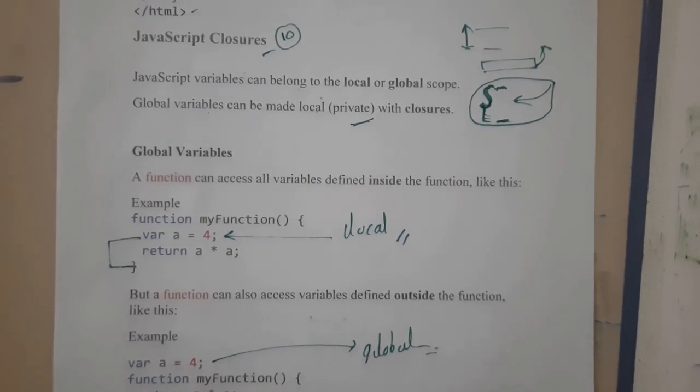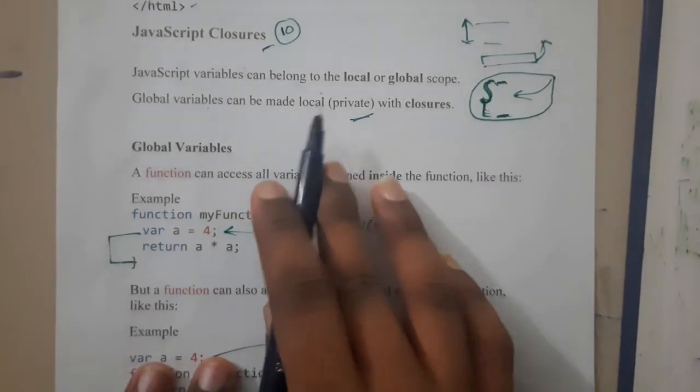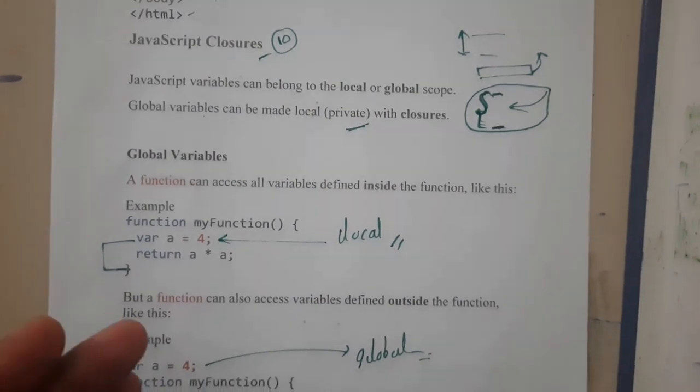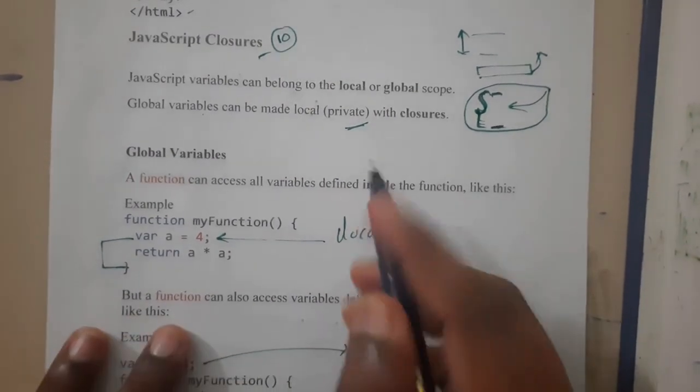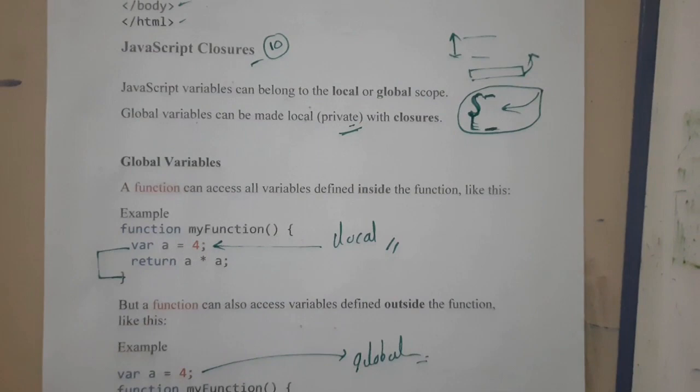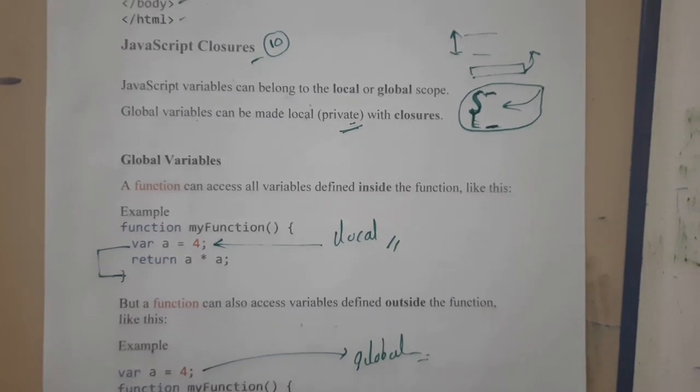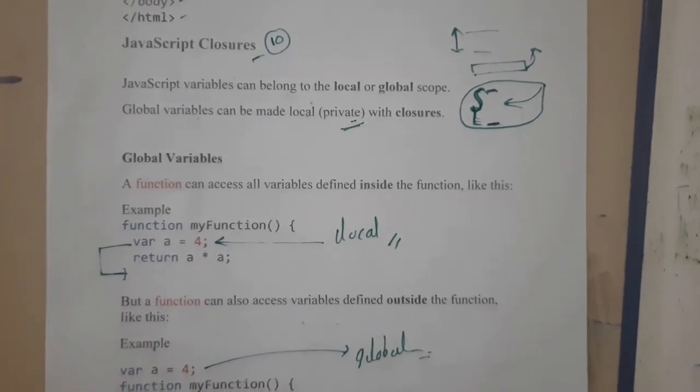Like this property—how the private variables are made, how you can make global variables as private variables—if I find it, I'll make sure I'll be linking that in the description. If you find it, please comment down below. I'll be pinning it so that everyone else can access it.